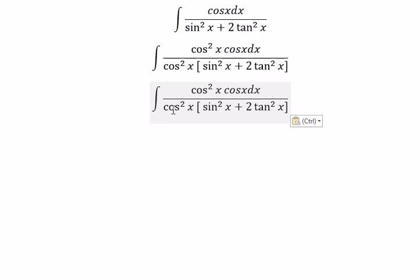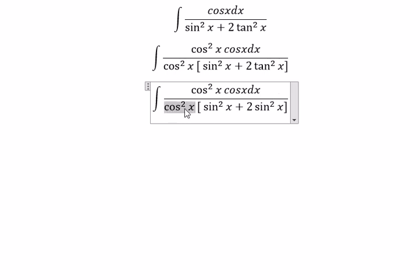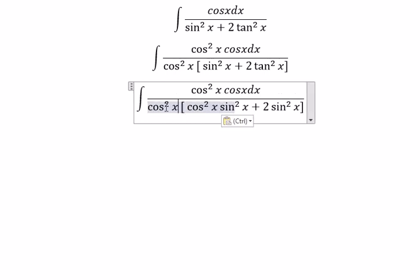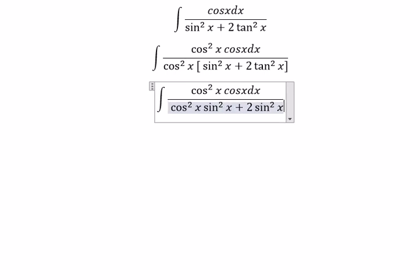Cosine x squared multiplied with tan x squared gives sine x squared. Next we do factorization with sine x squared in here.